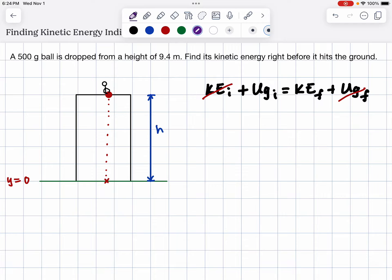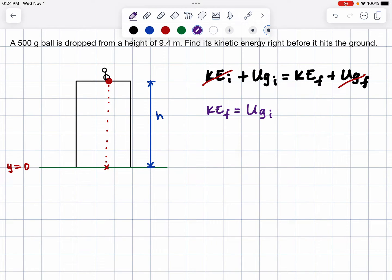Let's set it up. We're going to have kinetic energy final is equal to gravitational potential energy initial. We know the equation for gravitational potential energy. So we have kinetic energy final is equal to the mass of the ball times the acceleration of gravity times the initial height, because it's initial gravitational potential energy.